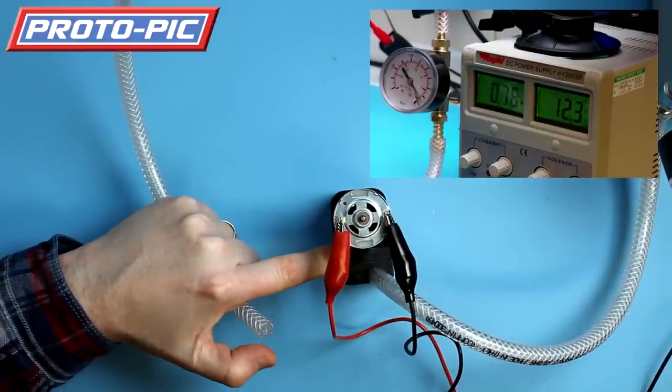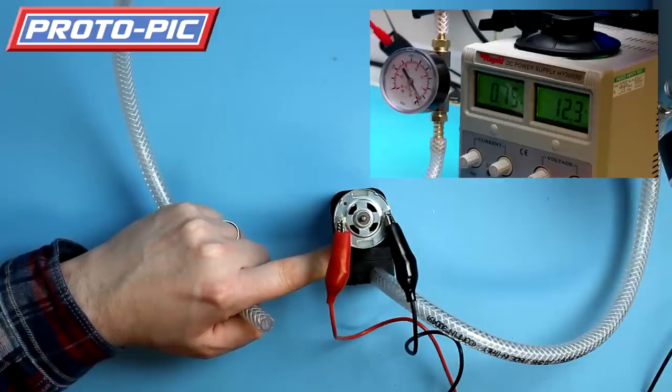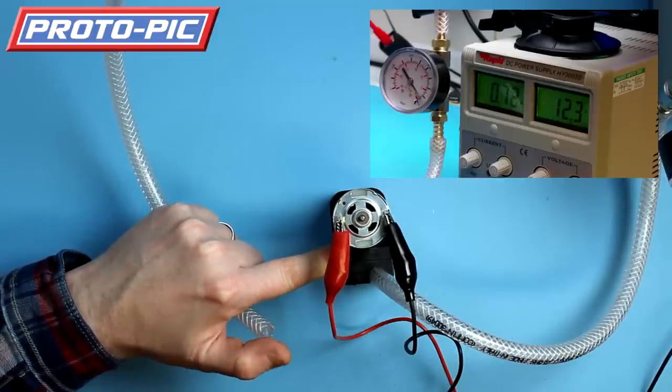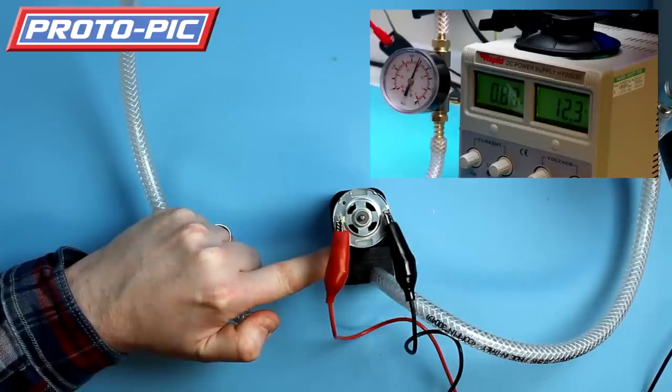I'm going to put my finger over it. You can see it's drawing approximately 0.75 amps—about three-quarters of an amp. I'll put my finger over it, and you can see it's all the way down to 15 inches of mercury.